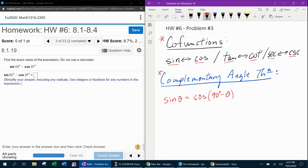And this is true for both functions that are co-functions. So we could also say cosine theta is sine of 90 minus theta. And the same would be true for tangent and cotangent and secant and cosecant.